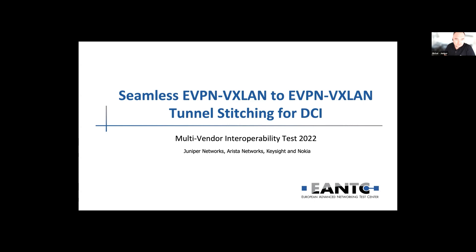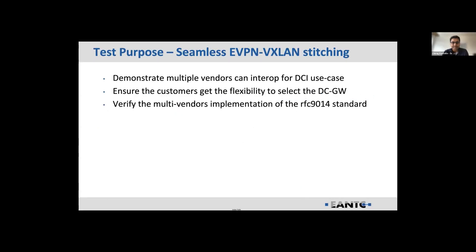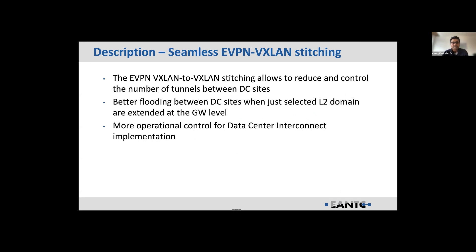Hello everyone, this is Michael from Juniper Networks. The purpose of this demo is to show vendor interoperability for a data center interconnect use case. Number two, customers will have the flexibility to select the data center gateway. And finally, all multi-vendor implementations share a common implementation of RFC 1914 standard.